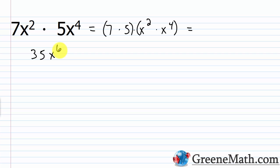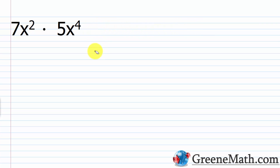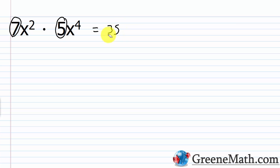This is a very slow way to perform this operation. Although it's technically how you show it, it's not the way you want to do it in practice. All you want to do is multiply the parts you can together: 7 times 5 is 35, then x squared times x to the fourth — x stays the same, add the exponents, 2 plus 4 is 6. Multiply the number parts together, then the variable parts, and you have your product.